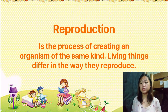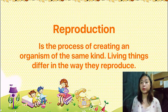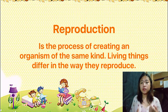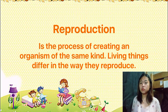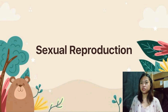Reproduction is the process of creating a new organism of the same kind. Because we will be focusing on how living things reproduce, let's move on. The first type of reproduction, which is the most common type, is sexual reproduction.